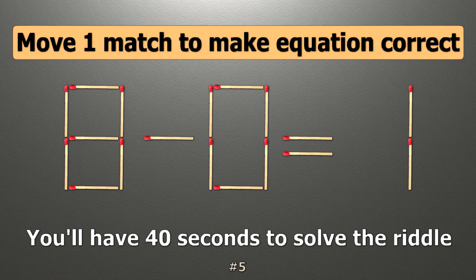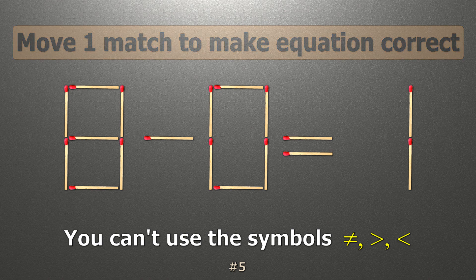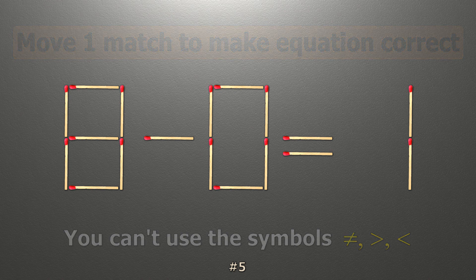We have the equality 8 minus 0 equals 1. Our equality is wrong. We need to move one match to make our equality correct.